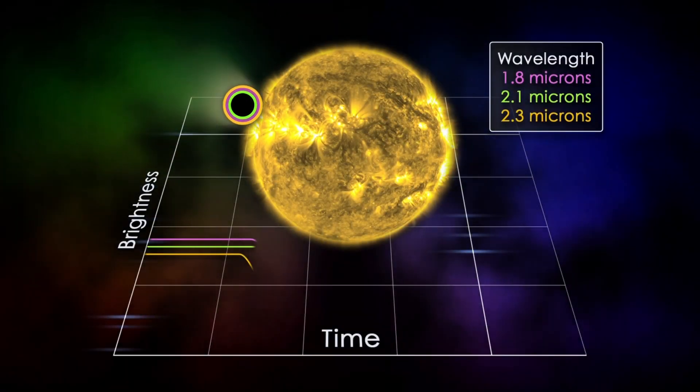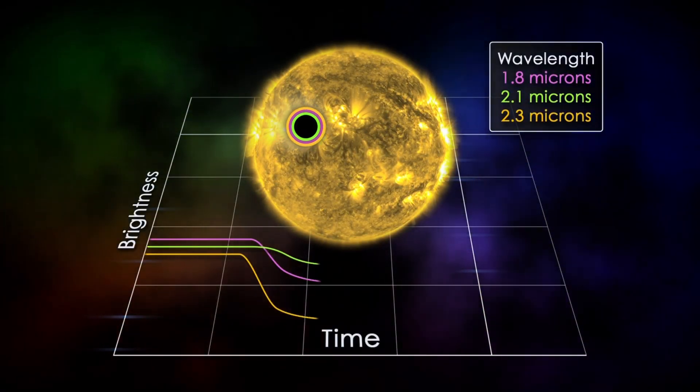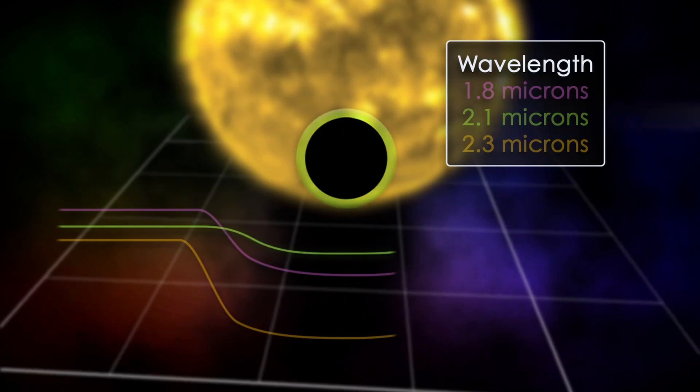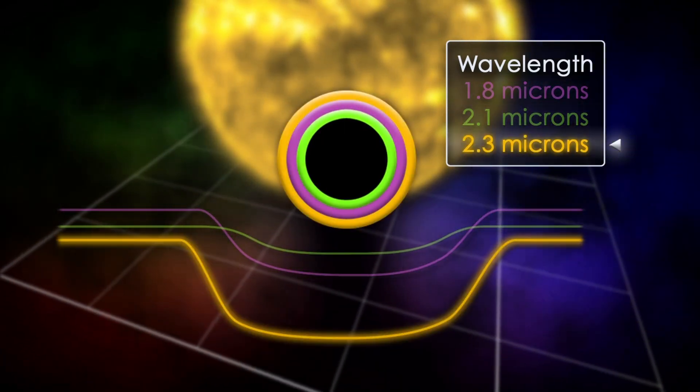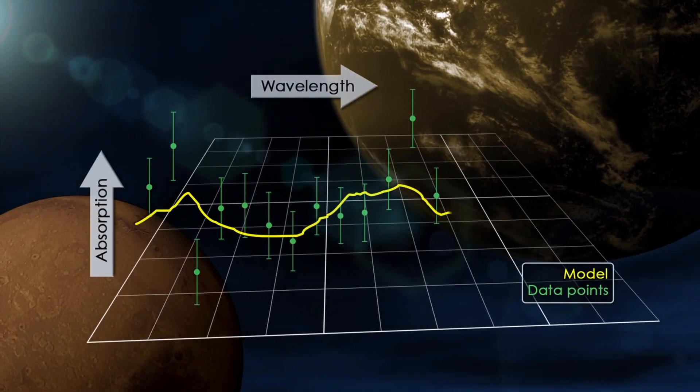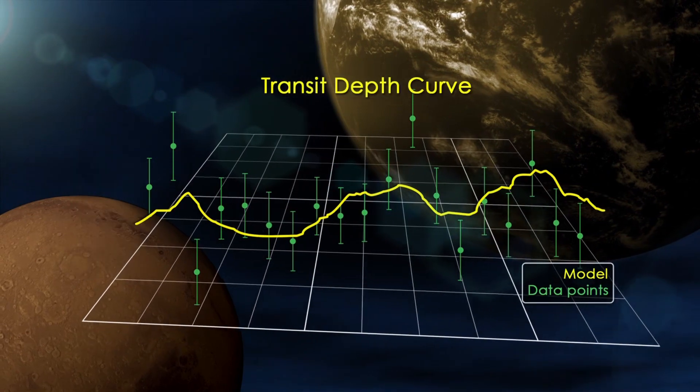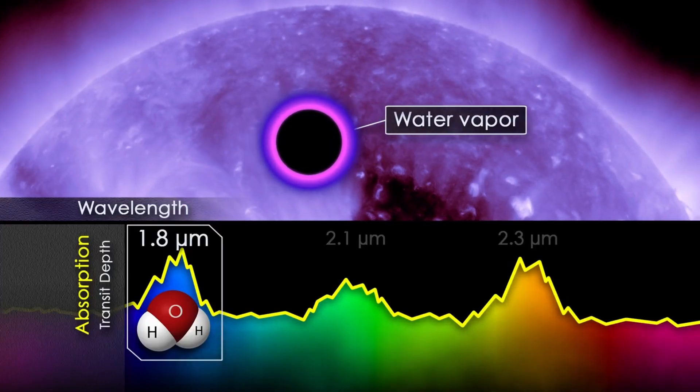Organic molecules can be detected in the atmospheres of exoplanets using a technique called transit spectroscopy. Spectroscopy involves splitting light into its component wavelengths. Organic molecules absorb light at specific wavelengths, so by looking for dips in the spectrum of an exoplanet, scientists can identify the presence of organic molecules.